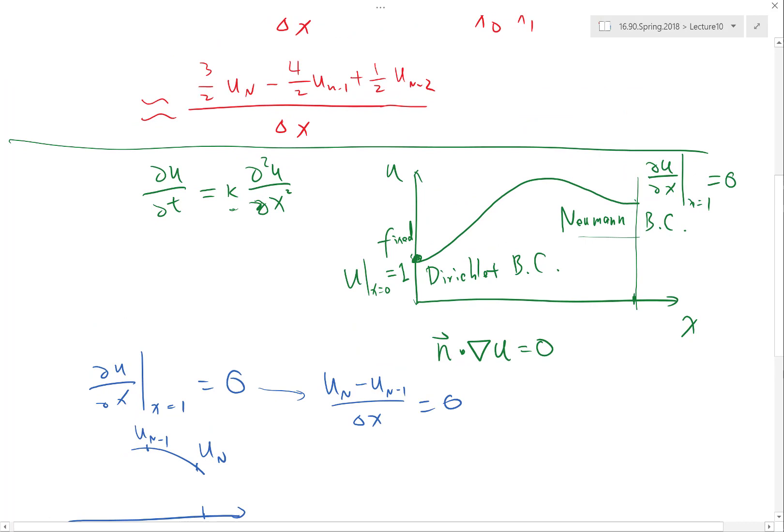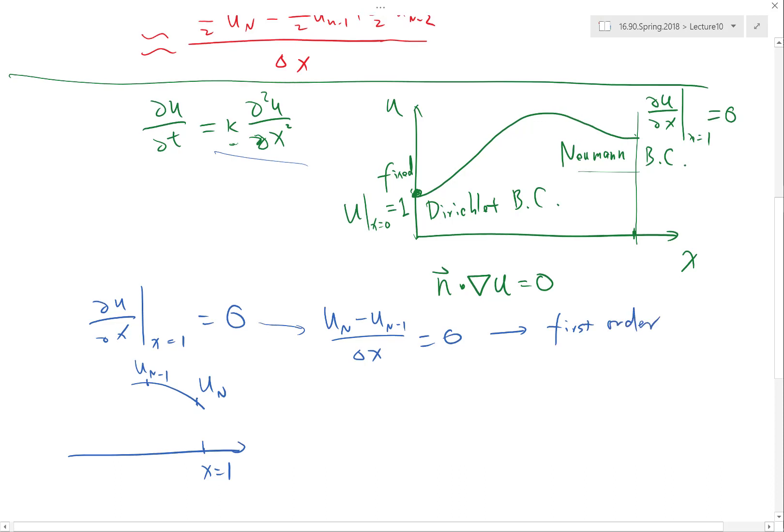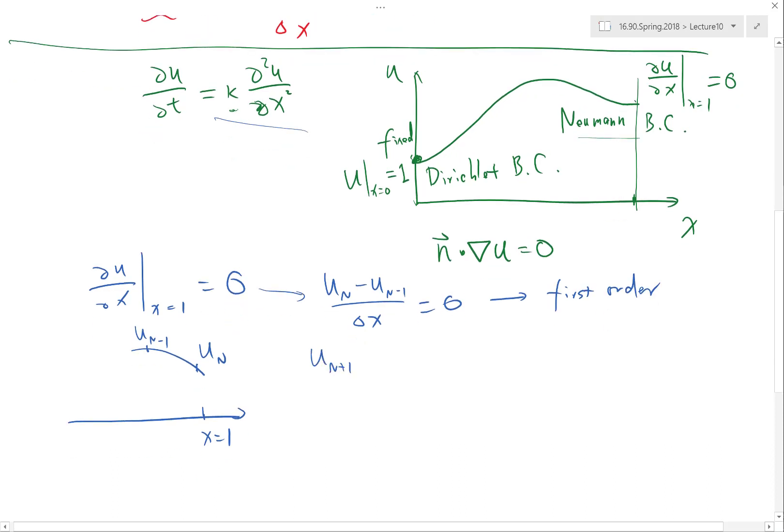Yeah, I can actually just plug in this one, right? And instead of saying that is equal to 0, I can say this is equal to 0. That's one way of discretizing the Neumann boundary condition for actually for any equation. But for a second order derivative, there is actually a pretty smart way of discretizing the Neumann boundary condition.